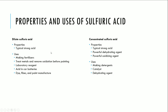Looking at the properties and uses of sulfuric acid: dilute sulfuric acid is still a very strong acid and shows characteristics of typical strong acids, which completely ionize in aqueous solution and react with metals and bases. General uses of dilute sulfuric acid include making fertilizers, treating metals and removing oxidation before painting, laboratory reagents, acid in car batteries, and dye, fiber and paint manufacture.